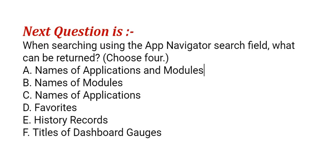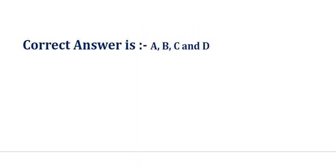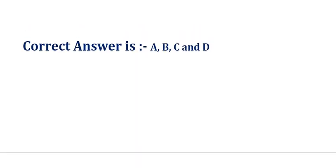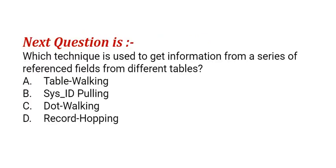The options are: option A, name of application and modules; option B, names of modules; option C, names of applications; option D, favorites; option E, history records; option F, titles of dashboard gauges. The correct answers are option A, B, C and D.